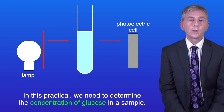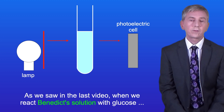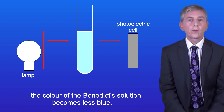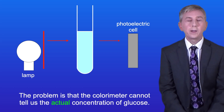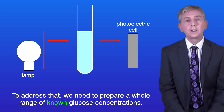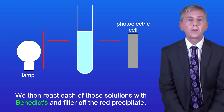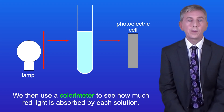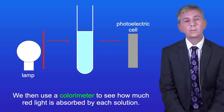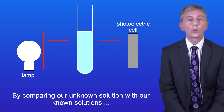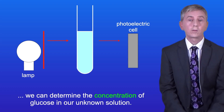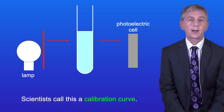In this practical, we need to determine the concentration of glucose in a sample. When we react Benedict's solution with glucose, the color of the Benedict's solution becomes less blue, and we can measure this change using a colorimeter. The problem is that the colorimeter cannot tell us the actual concentration of glucose. To address that, we need to prepare a whole range of known glucose concentrations. We then react each of those solutions with Benedict's and filter off the red precipitate, then use a colorimeter to see how much red light is absorbed by each solution. We carry out the same procedure with our unknown solution, and by comparing our unknown solution with the known solutions, we can determine the concentration of glucose in our unknown solution. Scientists call this a calibration curve.